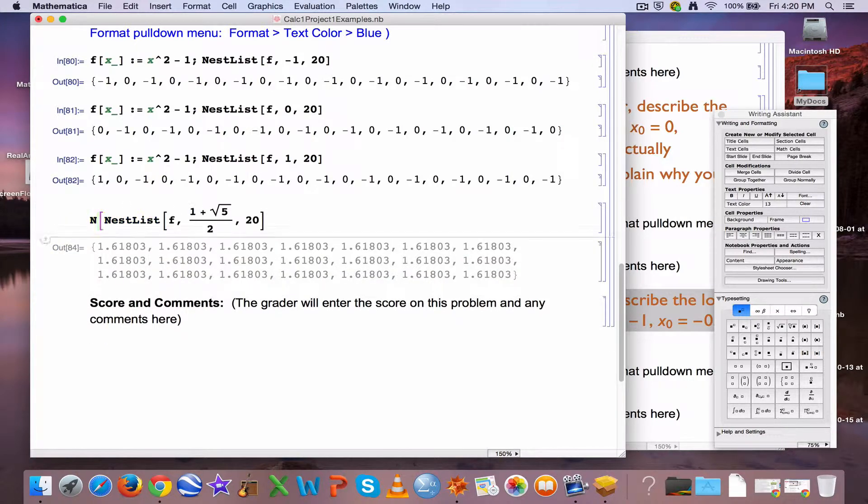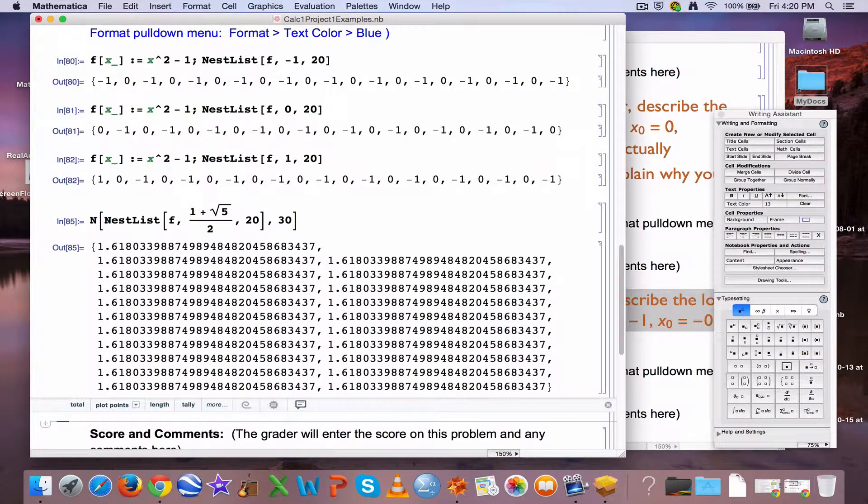Actually, if you use the capital N feature in the following way, let's see, we can even confirm the same number to say 30 decimal points. Yeah, they seem to all be the same. It seems like this is a fixed point.